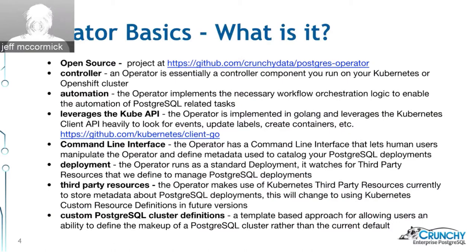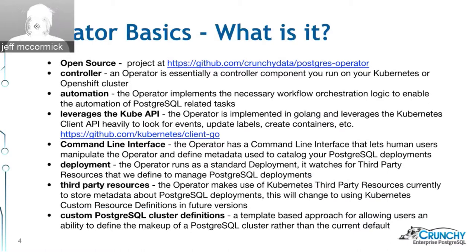You deploy the operator on a Kubernetes or OpenShift cluster and it waits for stimulus from external events to cause it to act. All the actions it takes are Postgres-database-related. You use an operator to automate things — in the world of databases, there are all kinds of workflows that DBAs would do when deploying Postgres clusters on Kubernetes or OpenShift, and we can automate a lot of those manual tasks.